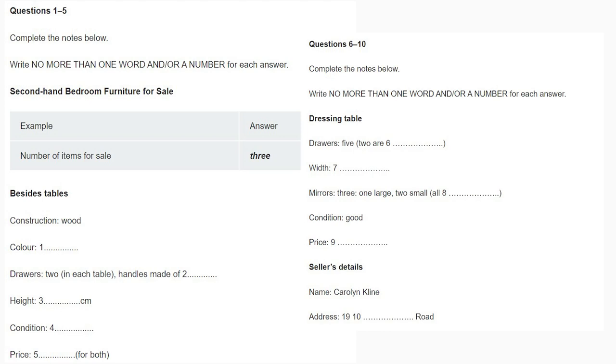Before you hear the rest of the conversation, you have some time to look at questions 6 to 10. Now, can you tell me about the dressing table? Yes. It matches the other tables in colour and style. Good. How many drawers does it have? Five altogether. The bottom two drawers hold more as they're deep. And the dimensions? How wide is it? That's all I need to know. It wouldn't be more than a metre and a half, would it? Well, just under actually. It's 1.25 metres across.